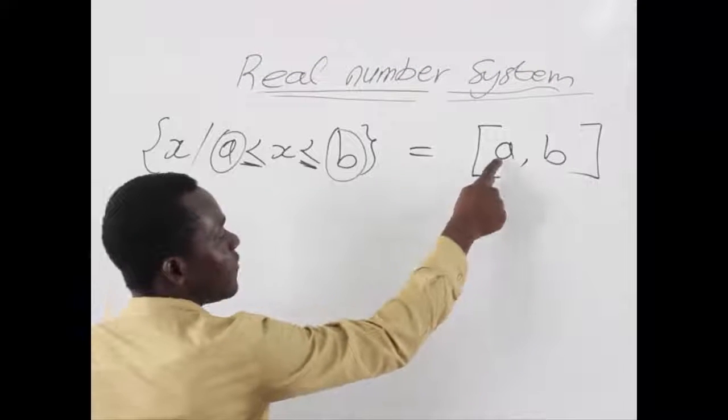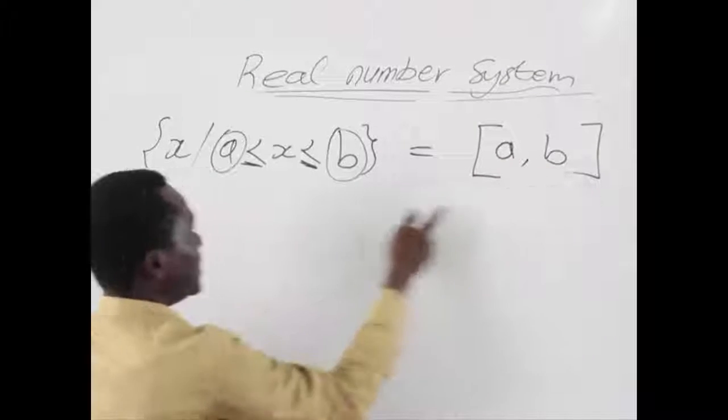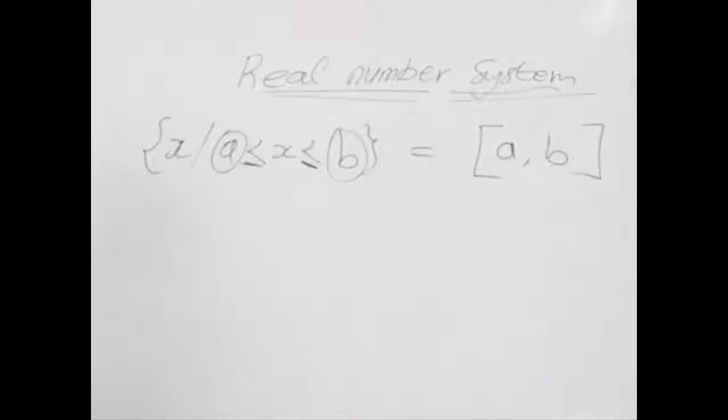The equal to sign here means a and b are part of the interval, so we use a square bracket or a square brace to indicate that they are part of the entire interval. We are actually moving from a and ending at b as denoted in this set notation.